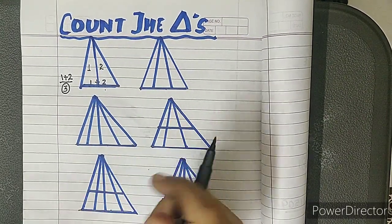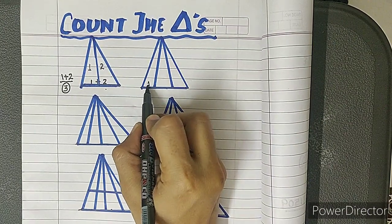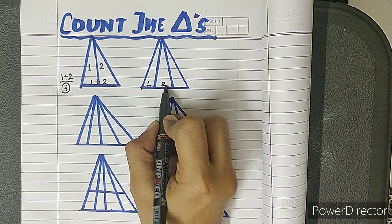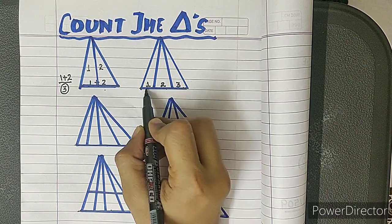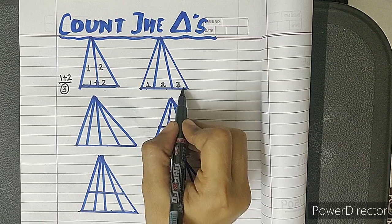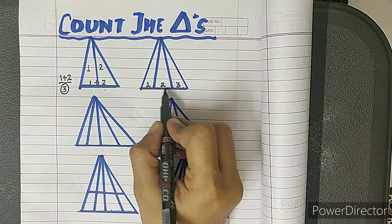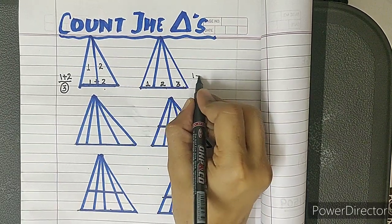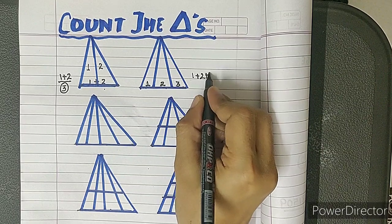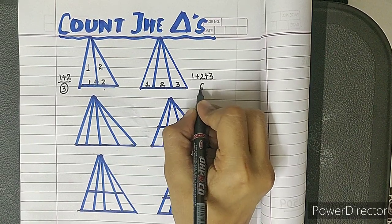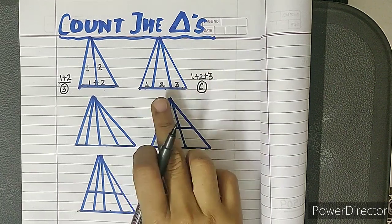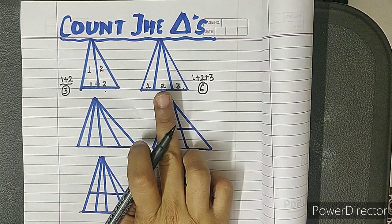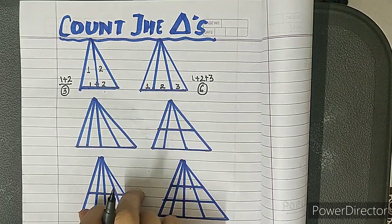The second question will make it clearer. This is base number one, this is base number two, and this is base number three. It has three bases, divided by three lines, so we write one, two, and three. Then we add the bases, and we get six. One plus two is three, three plus three is six. This means in this figure we have six triangles.